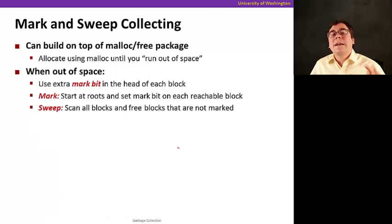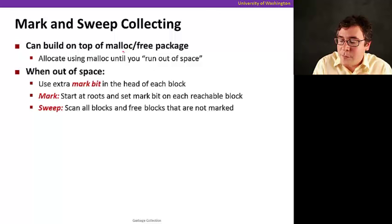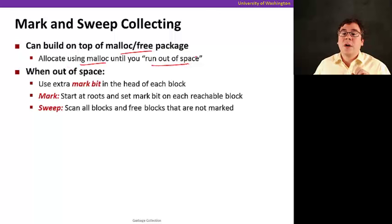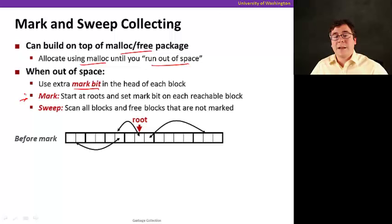So let's see how mark and sweep works. It's one of the classic simplest algorithms that do that, and that can be built on top of malloc and free package. So we allocate using malloc until you're out of space, and then you do garbage collection. And when you're out of space, here's what you're going to do. We're going to use an extra mark bit in the head of each block. And then we have this mark phase that starts at all of the roots and sets a mark bit on each reachable block. And once we do that over the entire heap, we can sweep, scan over all blocks in the heap and free the ones that are not marked because we know that those are not reachable.